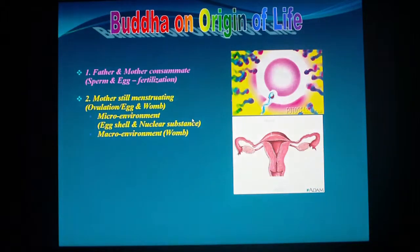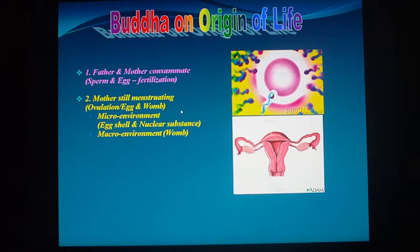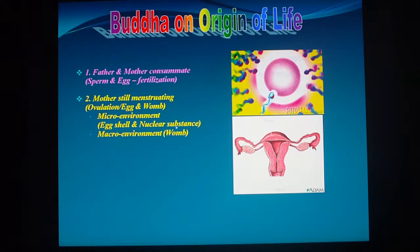The Buddha described the origin of life as follows: you have to have a father and mother consummate — that means sperm and egg, fertilization — and the mother must still be menstruating, so she is ovulating. The egg has an outer shell, a nuclear substance. The egg shell is a protective microenvironment for the chromosomes inside.